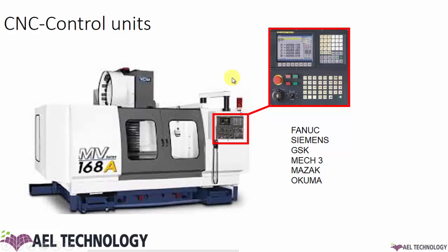A common question is: is there only a single programming language for all machines in the world? The answer is no. We have different controllers for different machines. The quite famous ones are Fanuc, Siemens, GSK, Mach3, Mazak, Okuma, etc. Based on the machine control unit, you have to create an NC program. That doesn't mean the programming method or tool path is different for all units — the post processor takes care of the control units. Once a tool path is generated, you can generate an NC code for different controllers with the help of post processing.